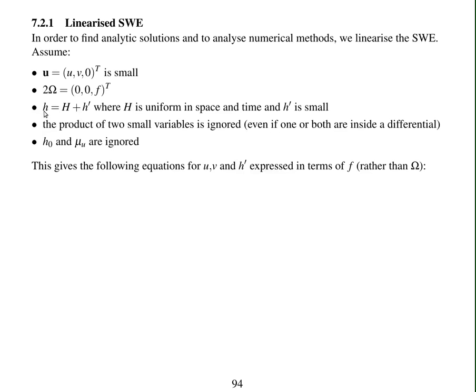We assume that the height h is a mean height which is uniform in space and time, and variations about that h prime. And because this h prime and u are small, then the product of small variables can be ignored. And that's even if one or both are inside a differential, you still ignore the products of small variables.